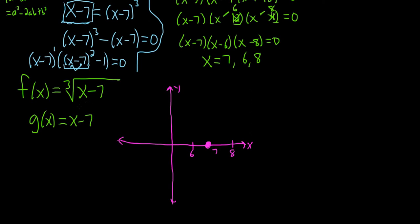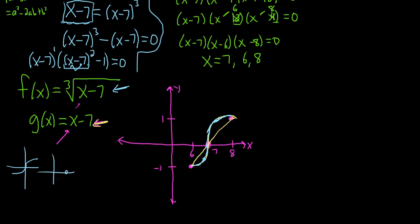Plugging in 6 into both functions gives negative 1, and plugging in 8 gives 1 for both. I'll draw g in yellow — it's a line. And f in blue — that's the cube root function shifted to 7. The cube root function looks like that shape, we just took it over to 7.